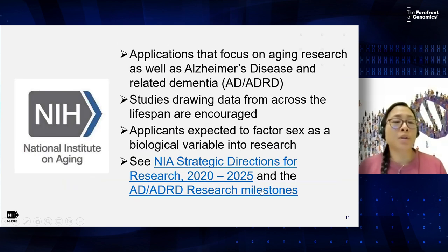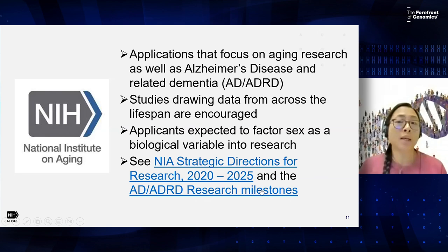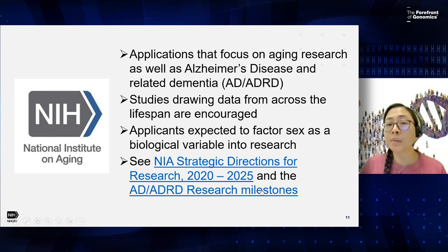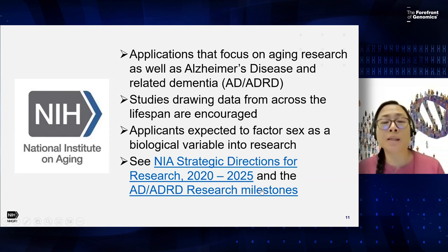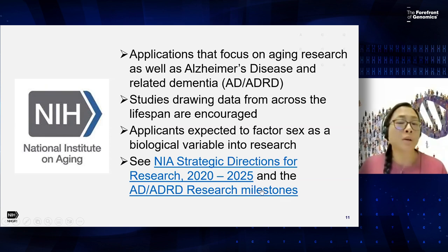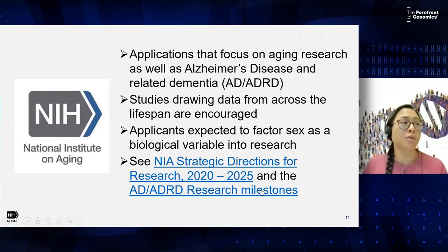Our partners at the National Institute on Aging, or NIA, are interested in applications that focus on aging research, as well as Alzheimer's disease and related dementia, and studies drawing from data across the lifespan. Applications are expected to factor sex as a biological variable into research. They've also provided information on their strategic direction as well as examples of research milestones, so I encourage you to look at those documents as well.